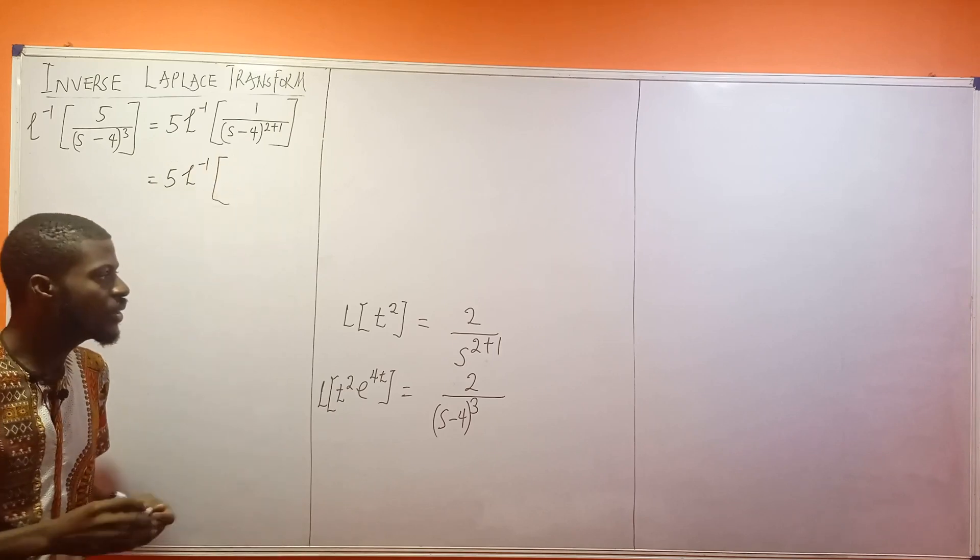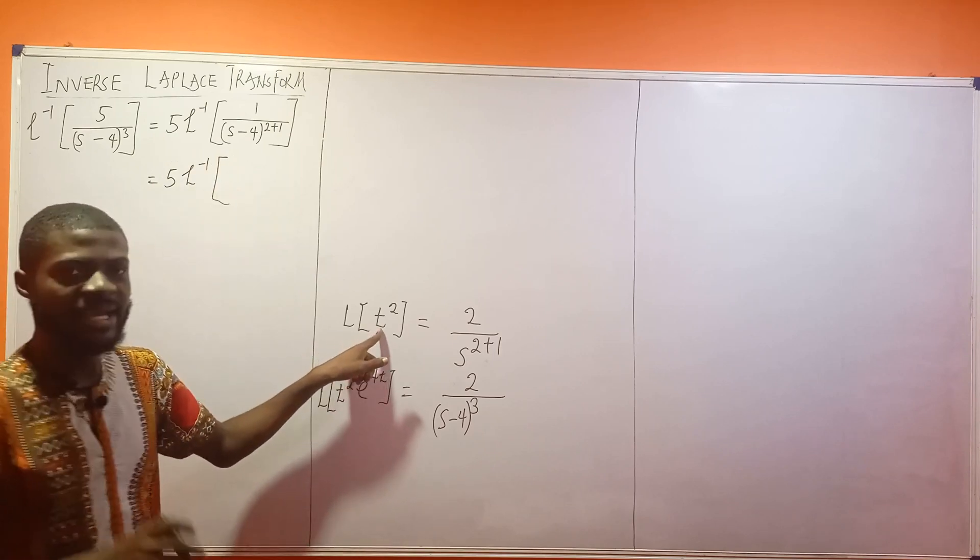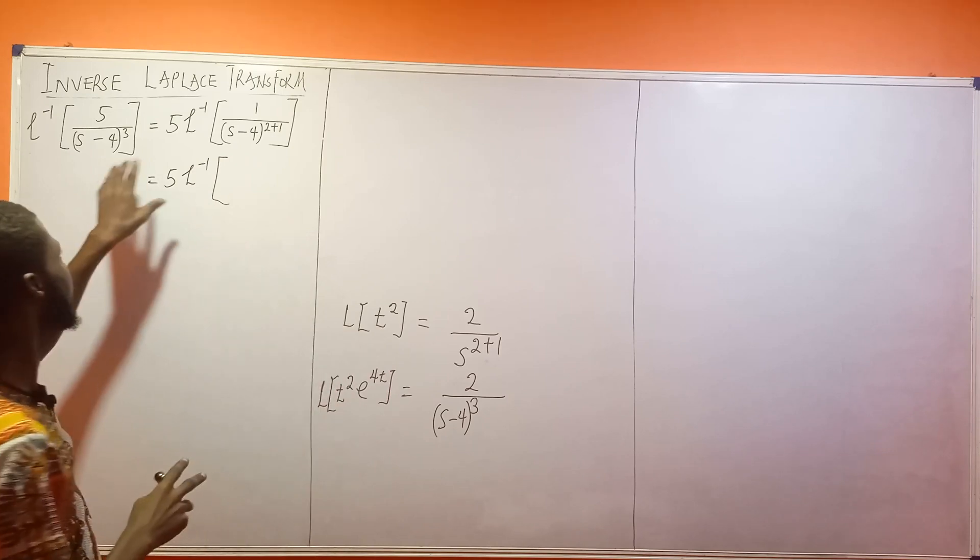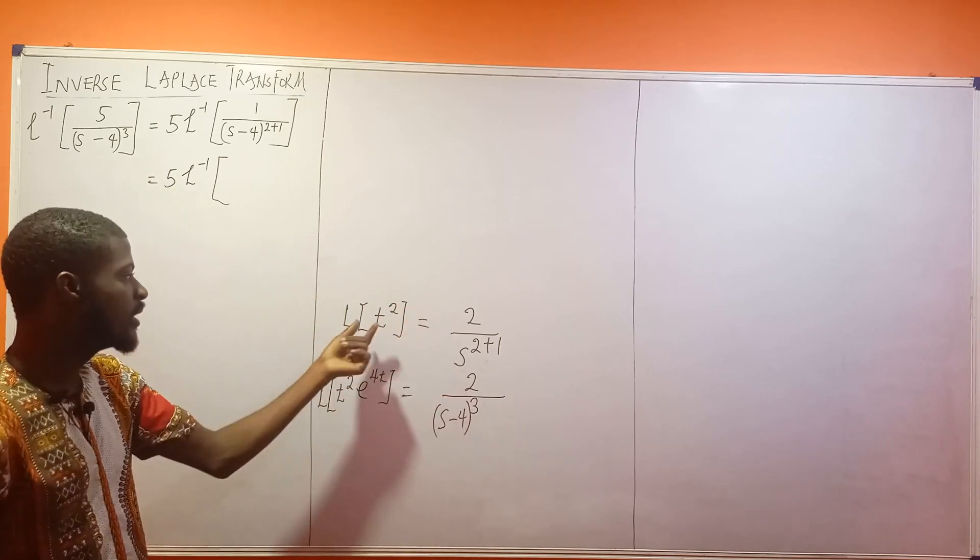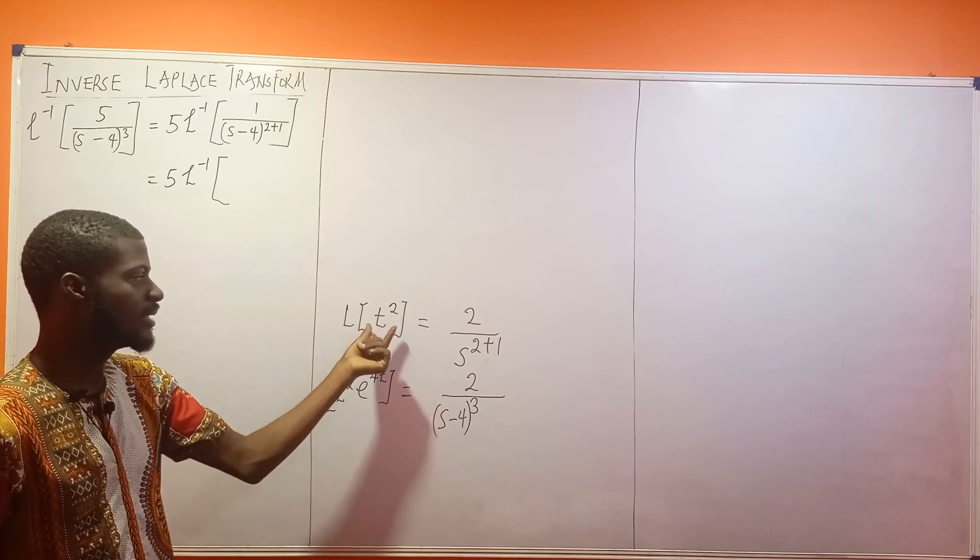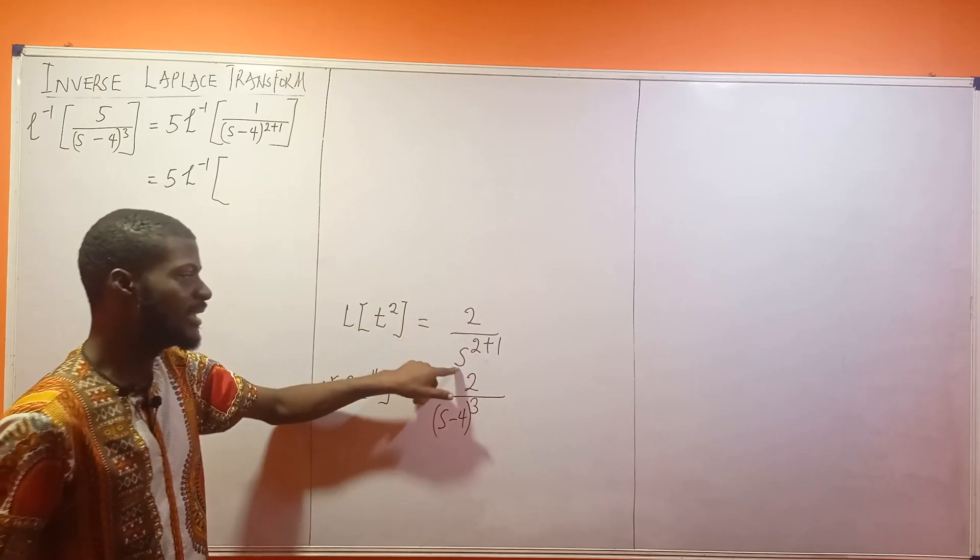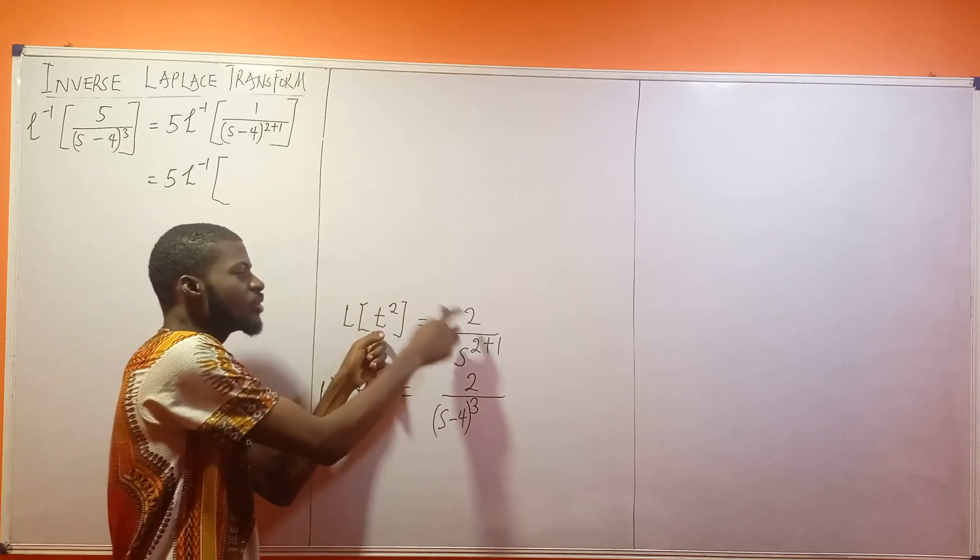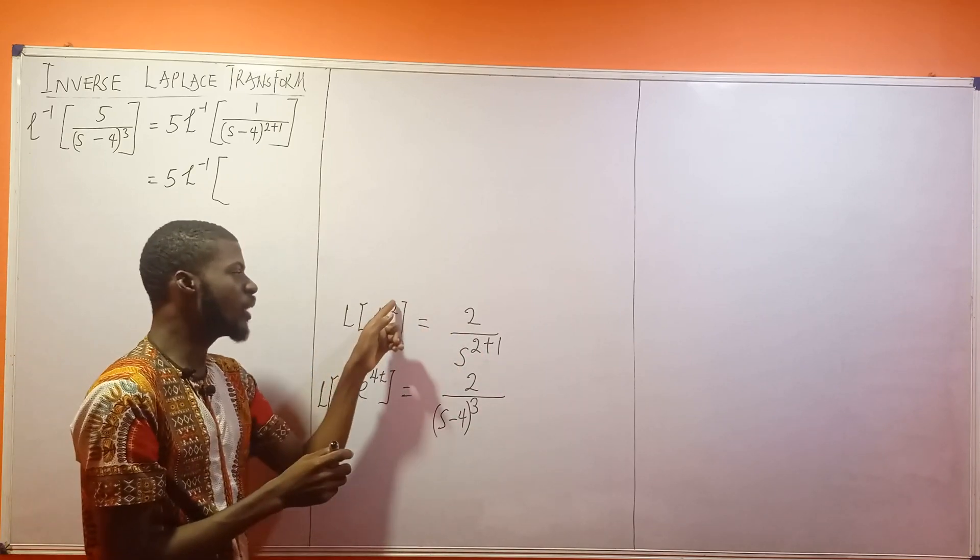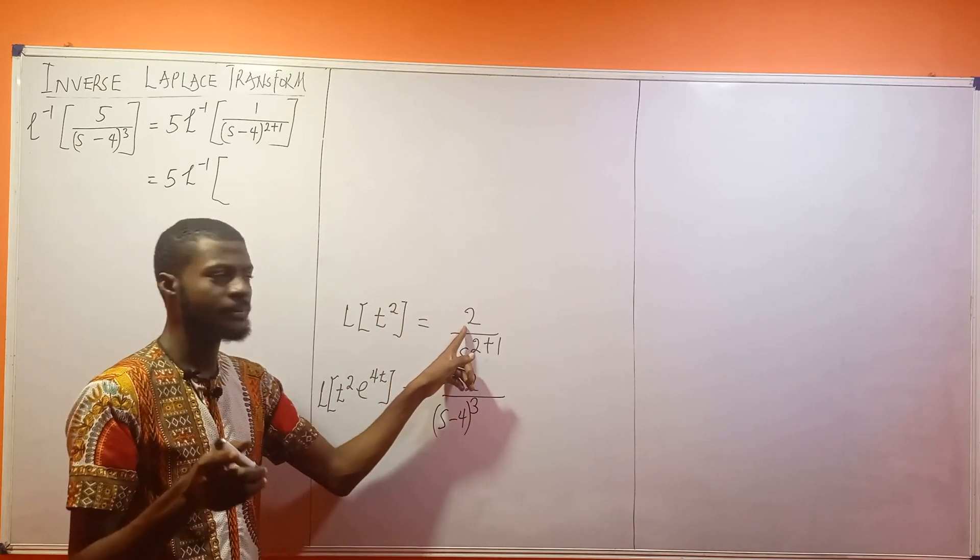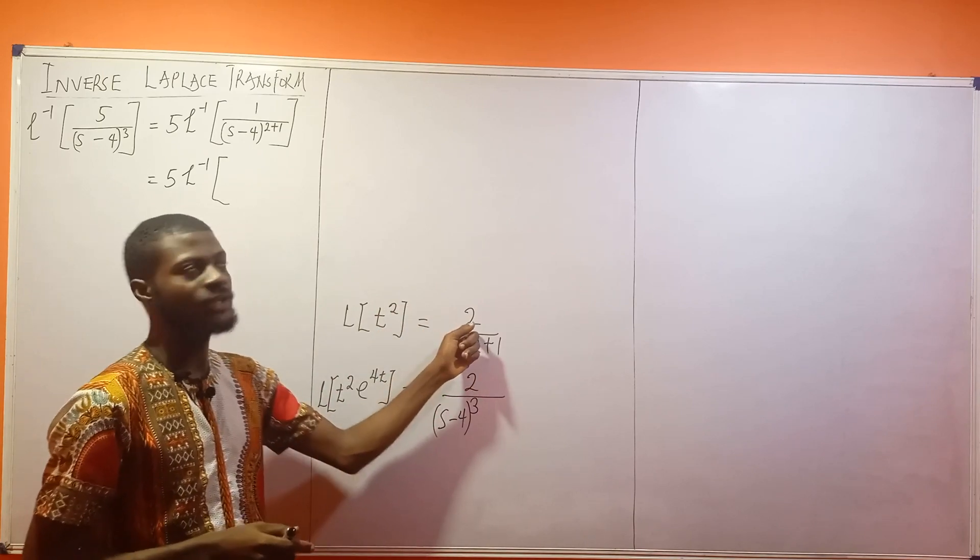Then we'll have inverse Laplace of this. Now, the thing is this: since I have t², and this is actually first shift theorem - what's here on this part of the board is first shift theorem. Since I have t², t² equals 2 over this. Meaning your t² must always have 2 at the top, because t² is supposed to start with 2 factorial.